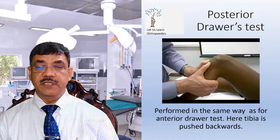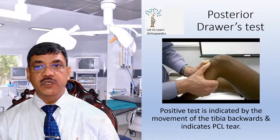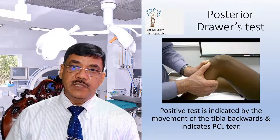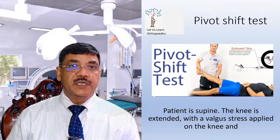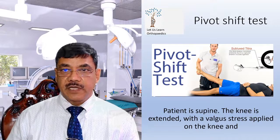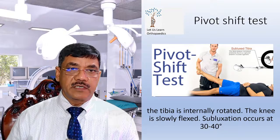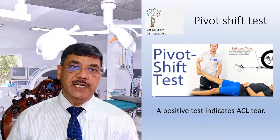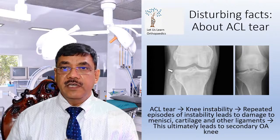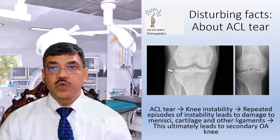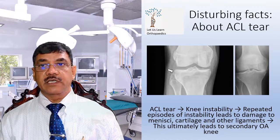The posterior drawer test is performed in the same way as the anterior drawer test, but instead of pulling the tibia anteriorly, it is pushed backwards. A positive test indicates PCL tear, with the tibia moving backwards. For the pivot shift test, the patient is supine, the knee is extended with a valgus stress applied and the tibia internally rotated, and the knee is then slowly flexed. Subluxation occurs at 30 to 40 degrees, and a positive test indicates ACL tear. There are certain disturbing facts about ACL tear: as it occurs, it leads to knee instability, and repeated episodes of instability lead to damage to the menisci, cartilage, and other ligaments, ultimately leading to secondary osteoarthritis of the knee.